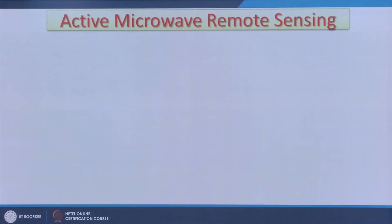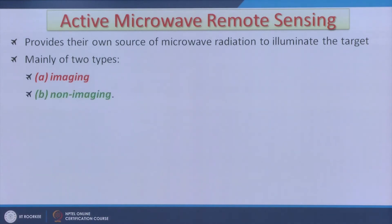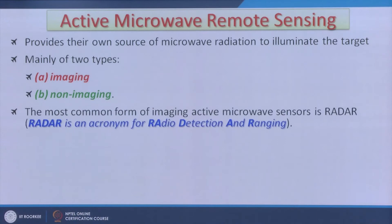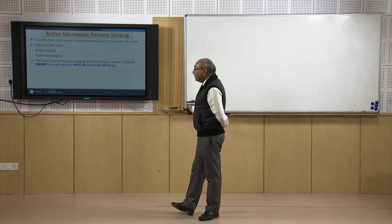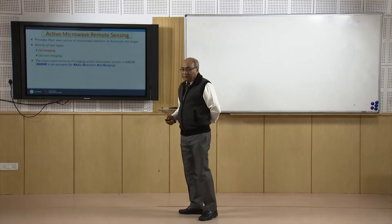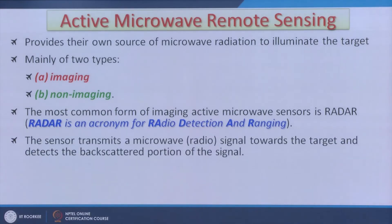The popular approach is active microwave, where the sensor provides its own source of microwave radiation to illuminate the target. There are two types of sensor systems: imaging and non-imaging. The most common form of imaging active microwave sensor is radar. Radar is an abbreviation standing for Radio Detection And Ranging, so radar remote sensing is essentially a ranging technique, and everything else is derived from that.